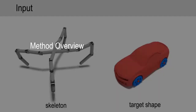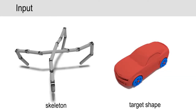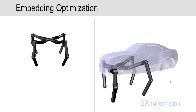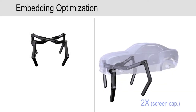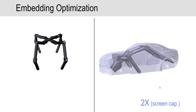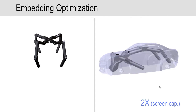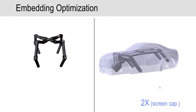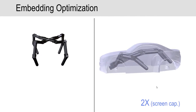Our algorithms take the morphological description, namely the skeleton of a physical character, as well as the target shape as input. The first stage of our design process is the embedding optimization, which aims to fold the skeleton inside the target shape as tightly as possible.